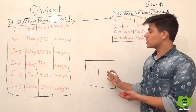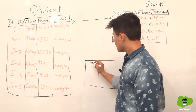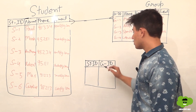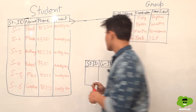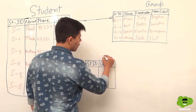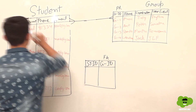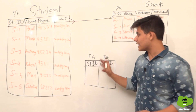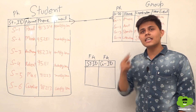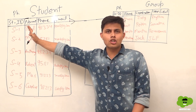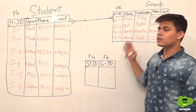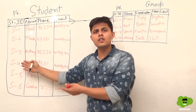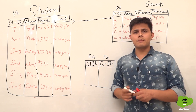Here we have another table with two fields: one stores the student ID and the other stores the group ID. This is basically a foreign key referencing the primary key of the student table, and another foreign key referencing the primary key of the group table. To implement a many-to-many relationship in a relational database, we create a third table with two foreign keys — one referencing each of the original tables.